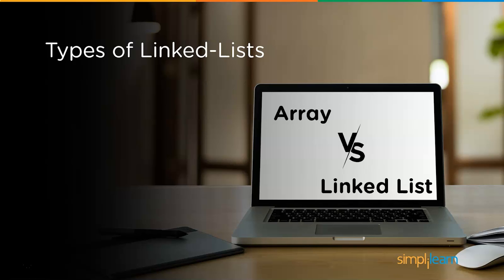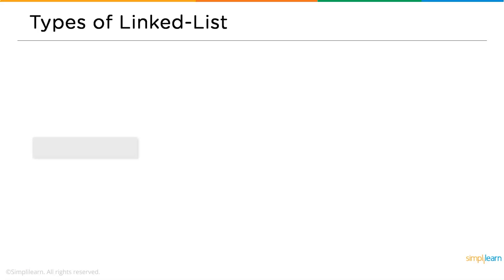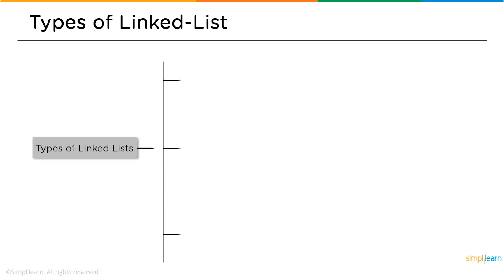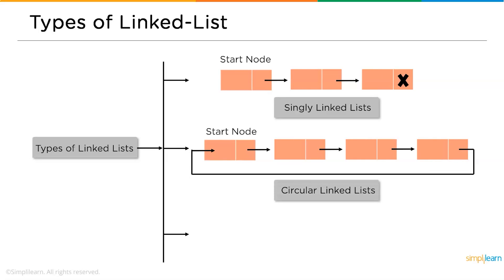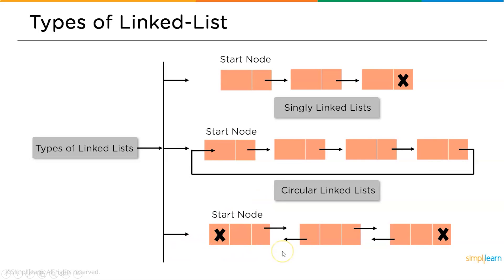Now let's understand the types of linked lists. Similar to arrays, linked lists are also divided into three types: singly linked list, doubly linked list, and circular linked list.